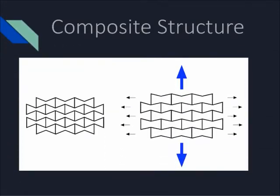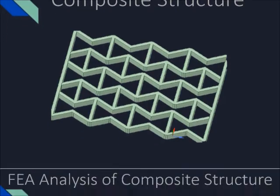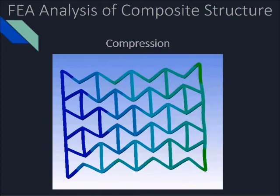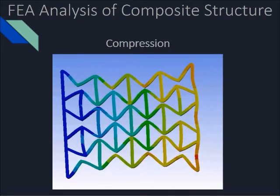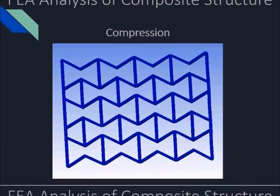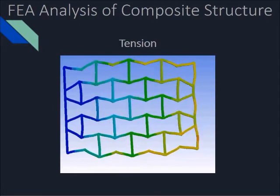Now that our hourglass is validated, we can create a larger structure by combining multiple hourglasses into one composite structure. Once again, the 2D drawing was used as a template for the 3D CAD model. Analysis of a large-scale auxetic hourglass structure in compression and tension. Notice how in the first example and subsequent example, the deformation is spread across the entire structure. This validates the behavior of a negative Poisson's ratio material.